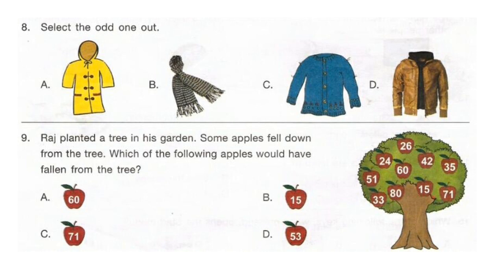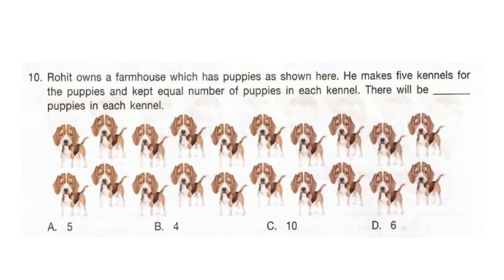Question 9: Raj planted a tree in his garden. Some apples fell down from the tree. Which of the following apples would have fallen from the tree? The correct answer is option D, 53. Question 10: Rohit owns a farmhouse which has puppies as shown. He makes 5 kennels for the puppies and keeps an equal number of puppies in each kennel. There will be dash puppies in each kennel. The correct answer is option B, 4. You have to count the number of puppies, that is 20, and divide by 5 kennels, so you get 4 puppies in each kennel.